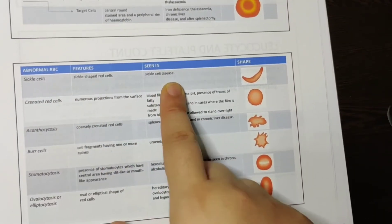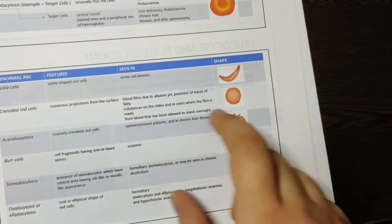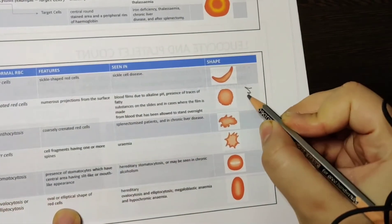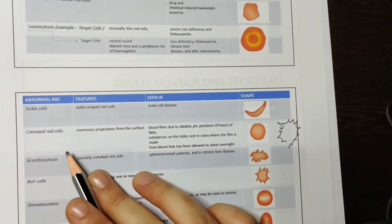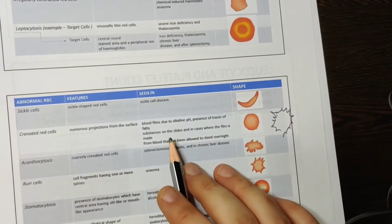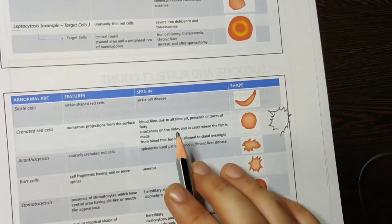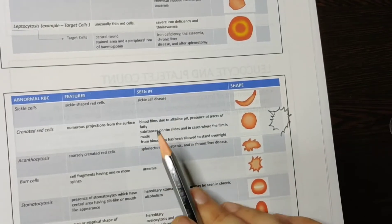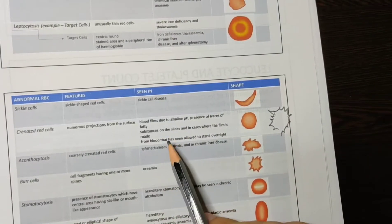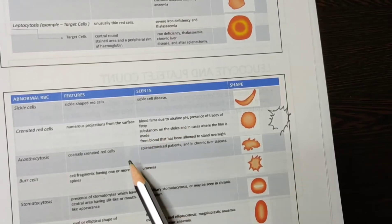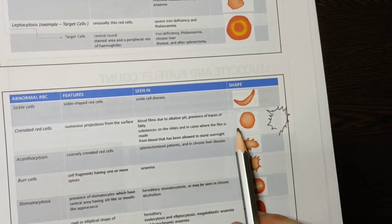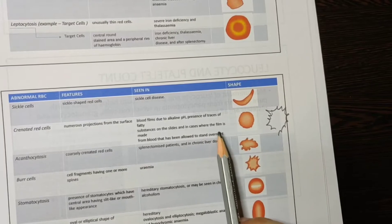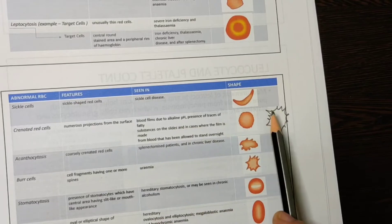Sickle cells are seen in sickle cell disease. Then, crenated red cells. Crenated red cells means there are a lot of spikes. Crenated red cells are seen due to any defect by the lab technician — this happens when we are not doing the test properly, for example when the blood films have a lot of alkaline pH, or there is fatty substance left on slides not cleaned properly, or slides are left outside overnight. Because of our negligence we can see crenated red cells.